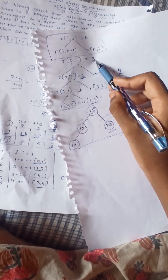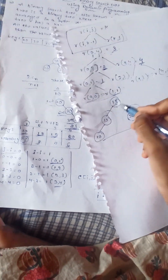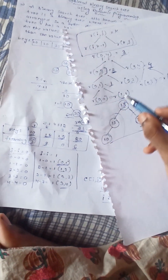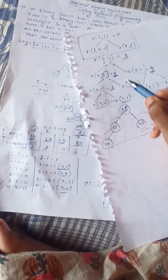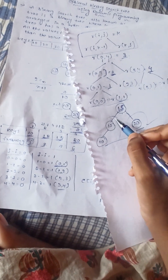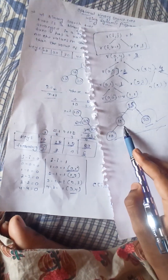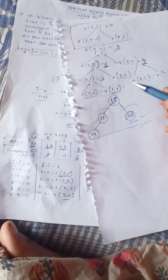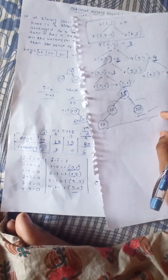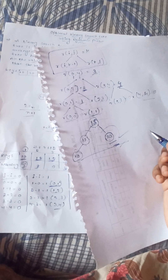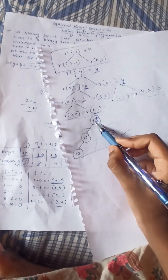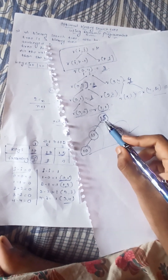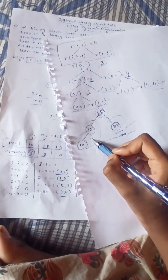From these values we construct the optimal binary search tree. The third key, 15, becomes the root node. The left side has the second root, second key 12, and 12's left side has the first key 10. The right side of 15 has the fourth key, 20. This is the optimal binary search tree, with root node 15 and left side values smaller than the right side. Thank you.